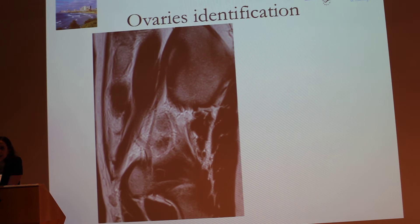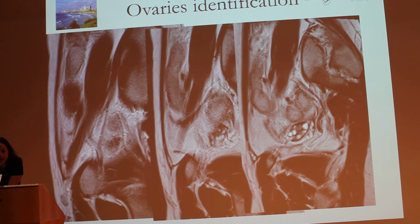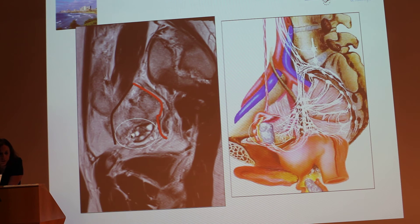Ovary location is important to know — specifically, the normal anatomical location. When you perform MRI, you can use the sagittal plane to locate the ovary. The normal ovary is located between the external and internal iliac arteries, as seen here on this anatomical slide. When you find an ovary with a hypersignal border and all these T2 hypersignal follicles, you can confirm it is normal ovary both in pattern and in location.